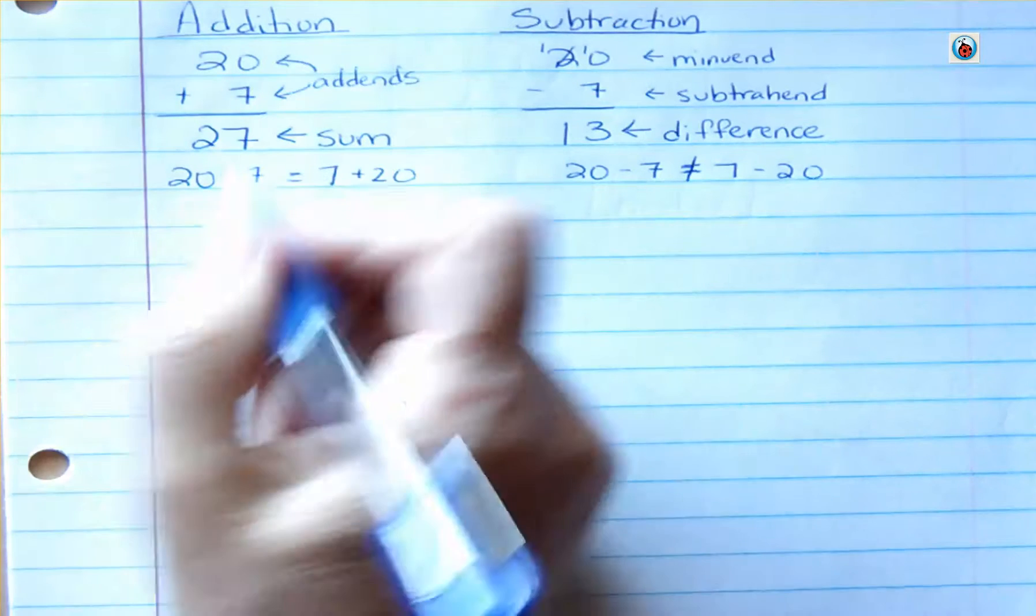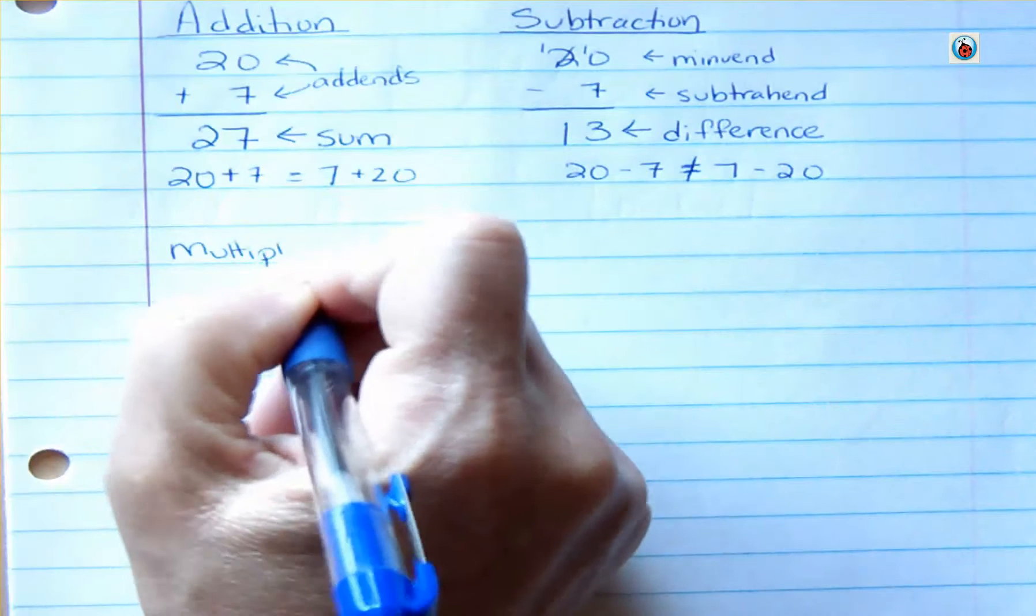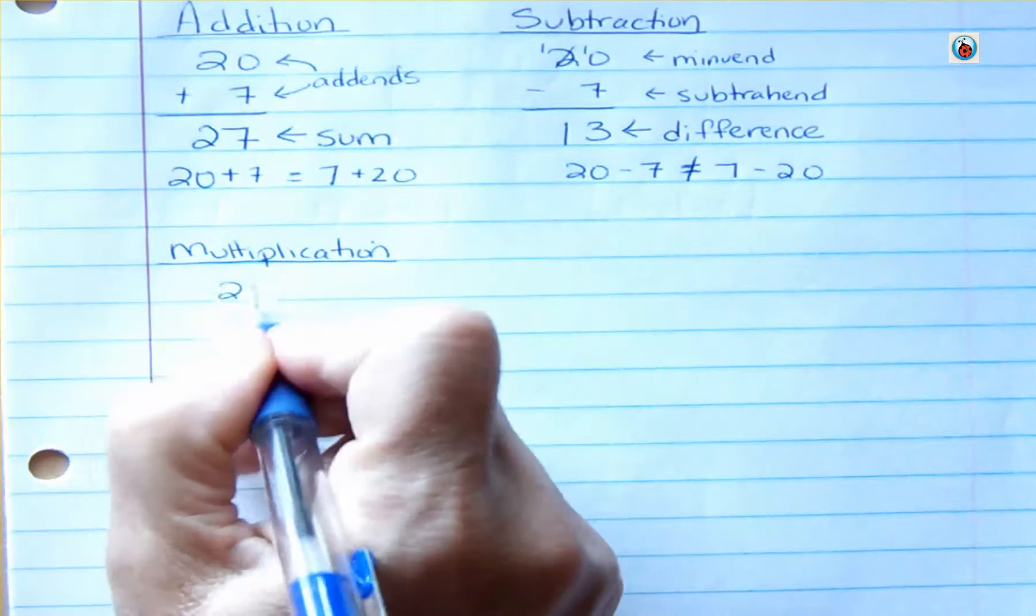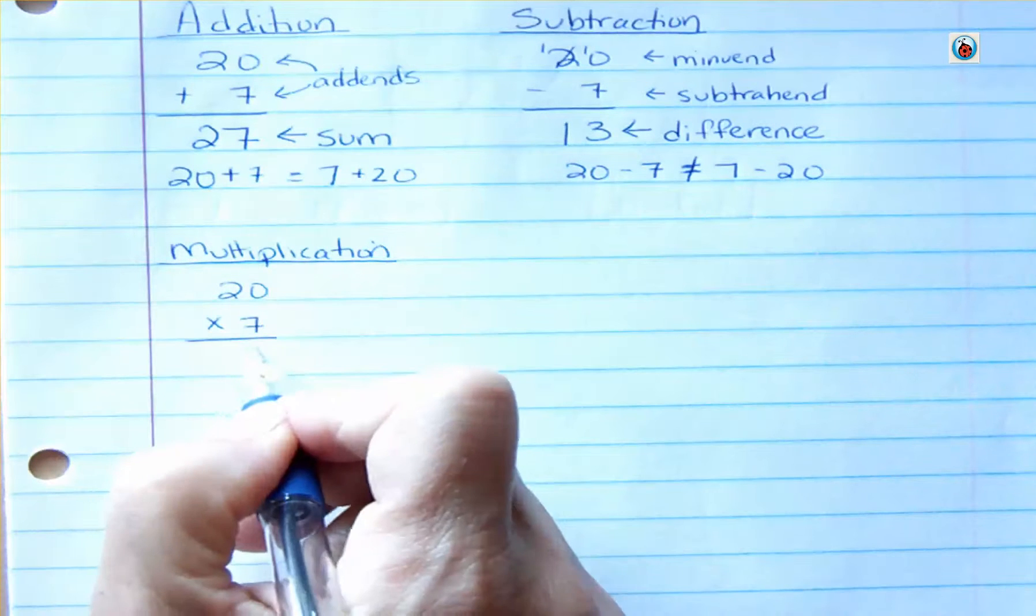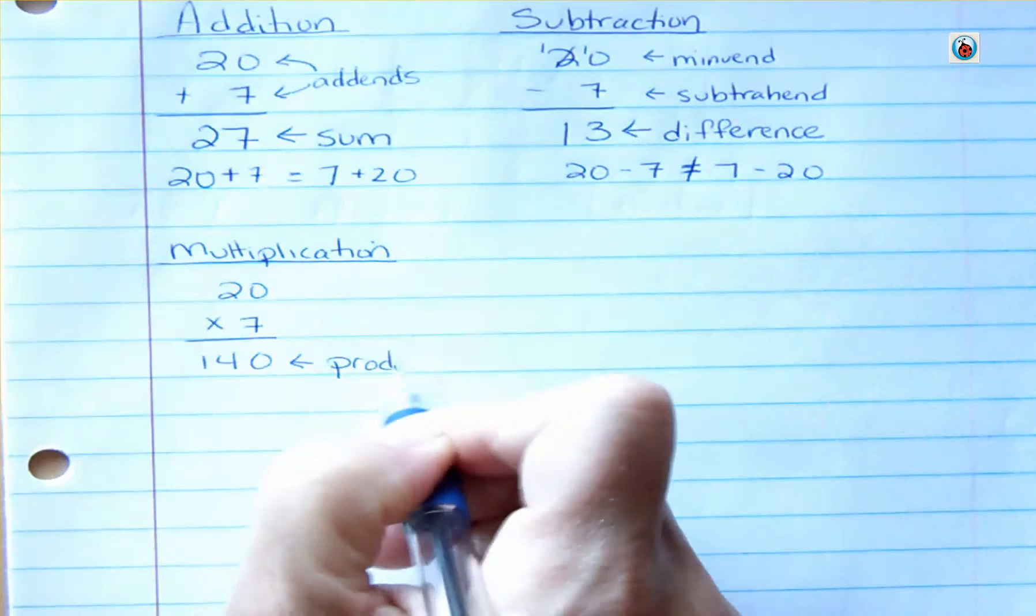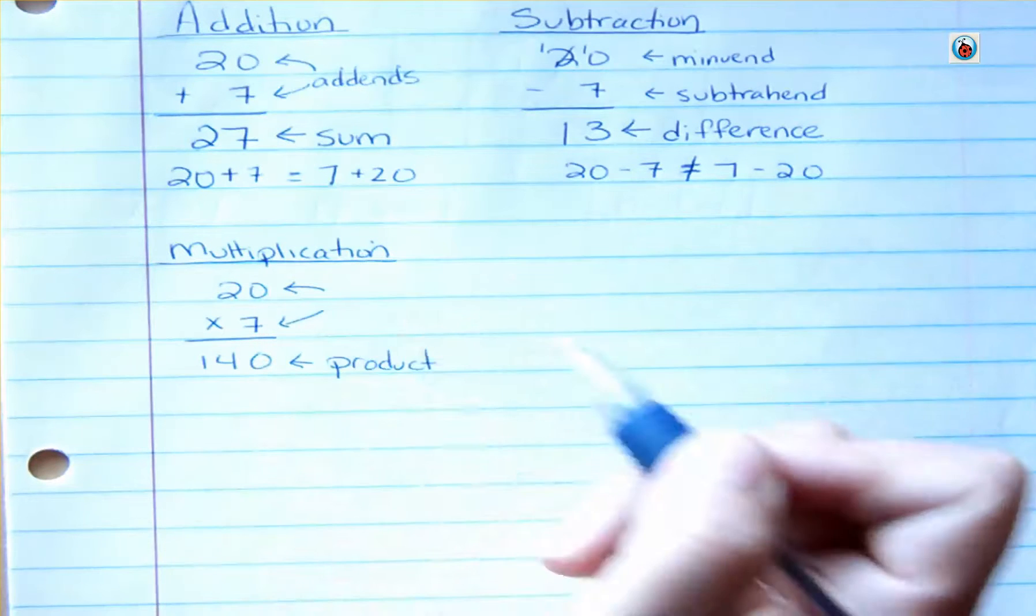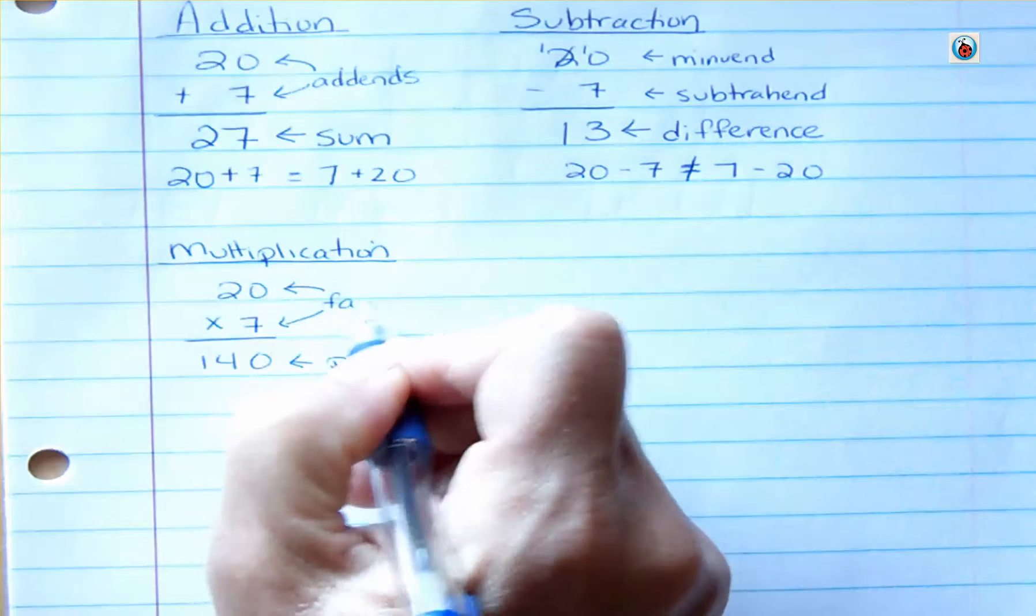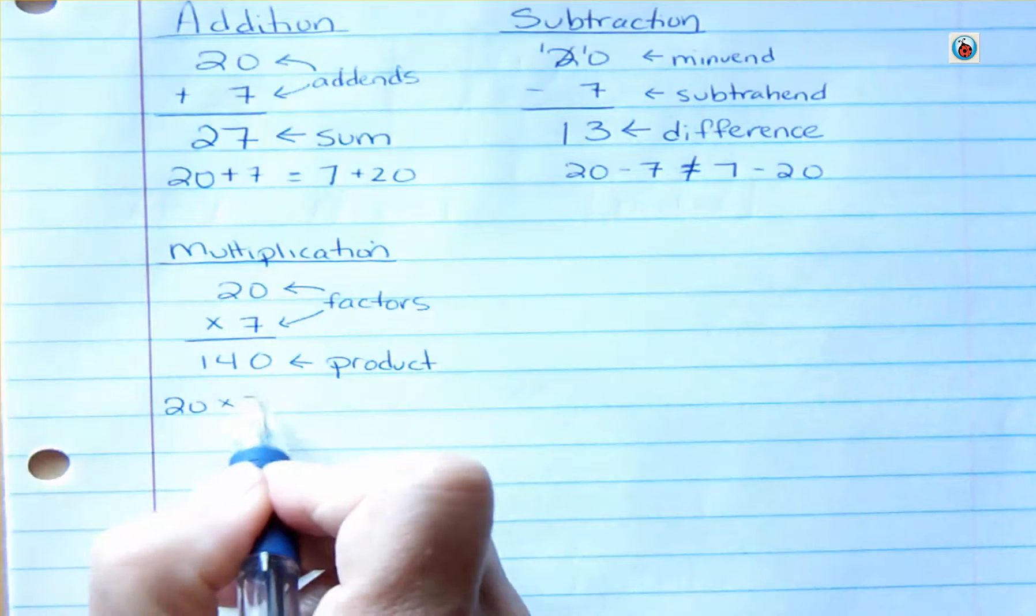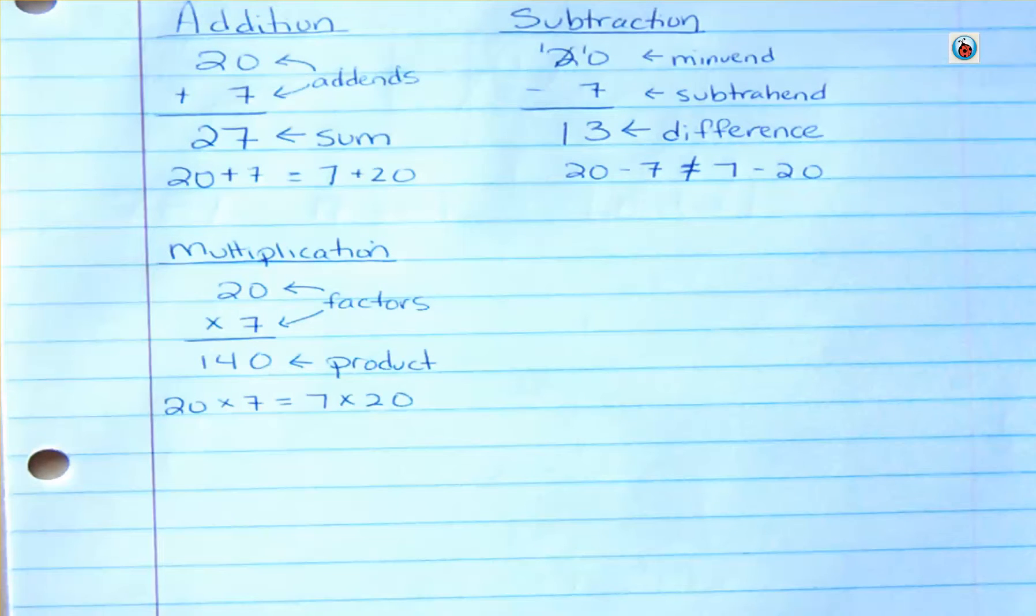For multiplication, we have something like 20 times 7, and that would be 140. And the answer to that would be a product. And multiplication is like addition in that it doesn't matter the order that you give it. And so both of these are called factors. And we can see, again, that 20 times 7 is equal to 7 times 20. So it doesn't matter which one comes first, so we don't give them separate names.